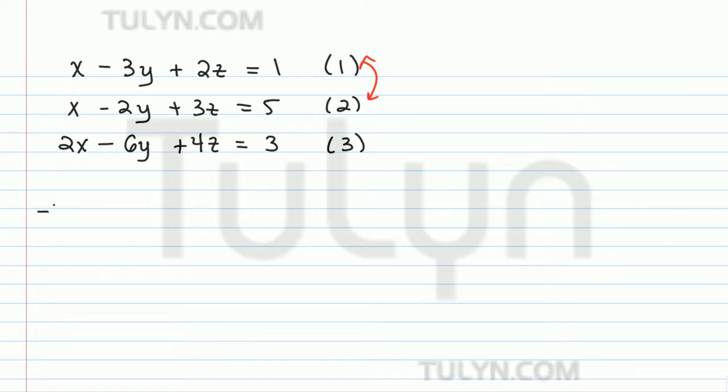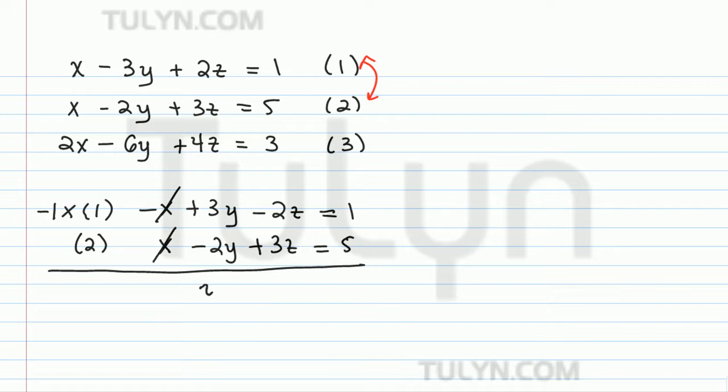Let's multiply equation 1 by negative 1 first. So we're going to get negative x plus 3y minus 2z equals 1. And then the second equation, we're just going to write as is, because remember, the goal is just to cancel out the x's. So x minus 2y plus 3z equals 5. When we add these two together, the x's are going to cancel out. We're going to be left with y plus z equals 6.